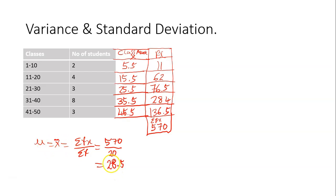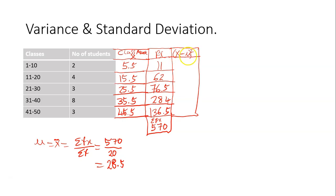The next thing we do is find deviation squared. Deviation means x minus the mean — if the mean is mu you write mu; if it is x-bar you write x-bar. So (x minus the mean) squared. Our x here is 5.5 and the mean is 28.5. So you put in bracket (5.5 minus 28.5) and square your answer. When you square it you should get a positive answer, which is 529.